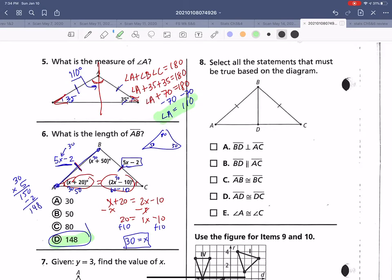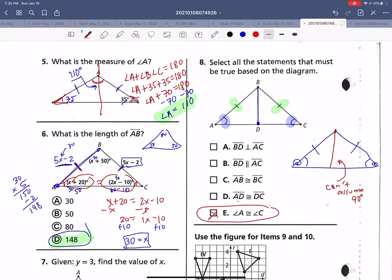Select all the statements that must be true based on the diagram. So we know these are equal, which means these have to be equal. We could redraw this diagram. And notice we don't necessarily know. This could be 90 degrees or it could be a little bit more than 90 or a little less than 90. We don't know for sure. So we can't assume this is a 90 degree angle unless they tell us otherwise. So what all do we know? We know A and C are equal. Is AD equal to DC? We don't know that for sure. AB is equal to BC. Yep. We know that because of that mark. I don't see anything parallel. And I don't see anything perpendicular. I can't assume it.